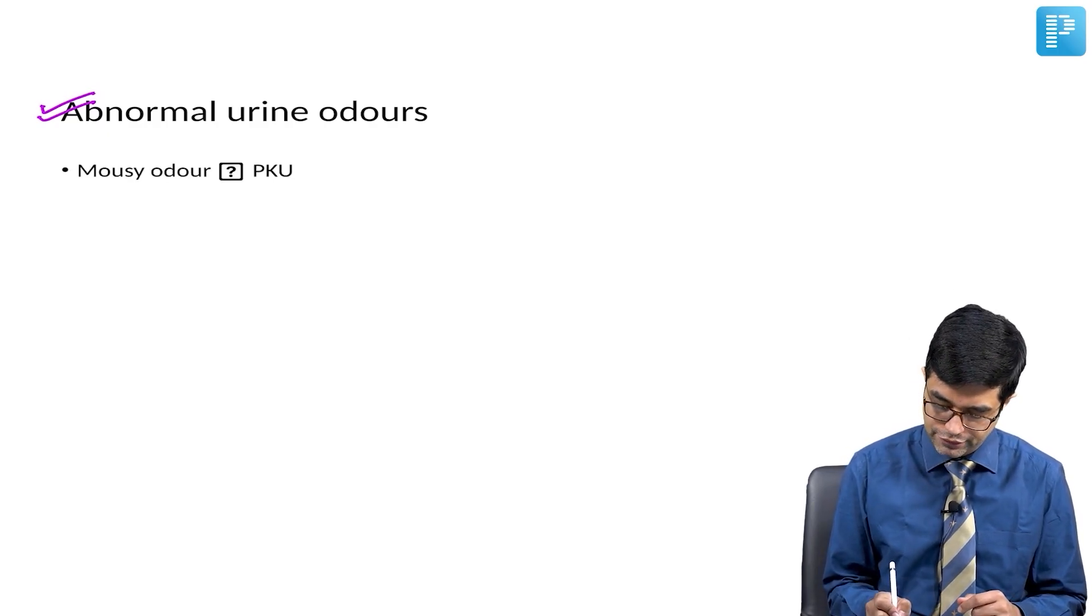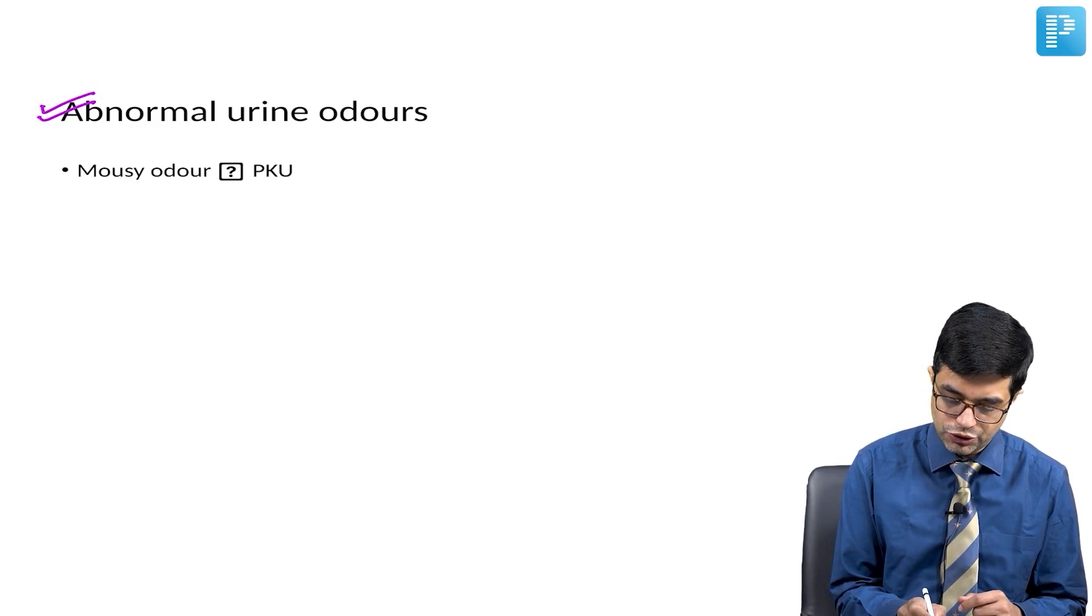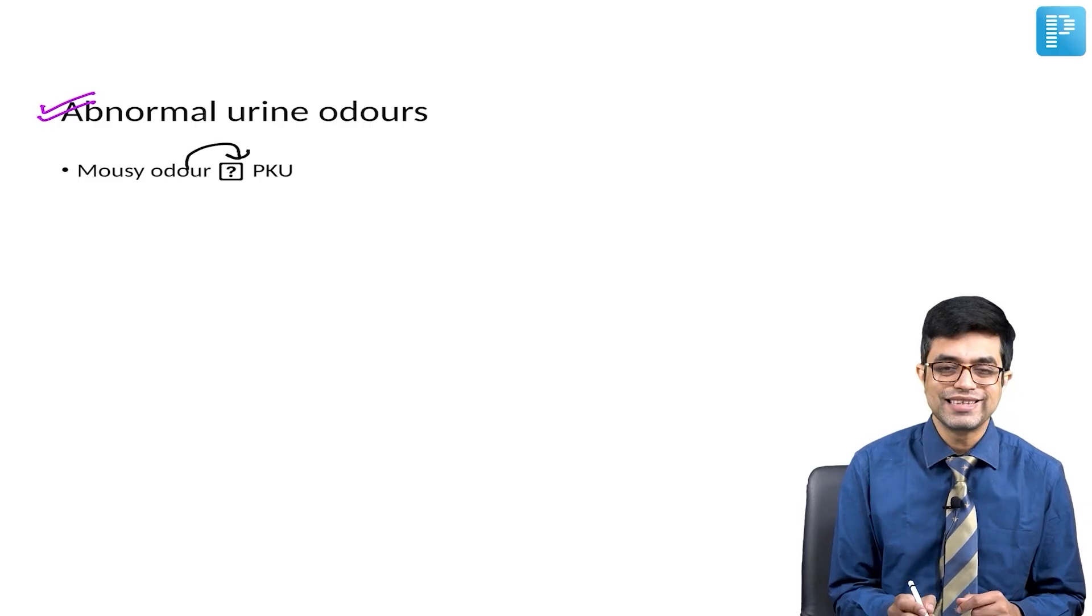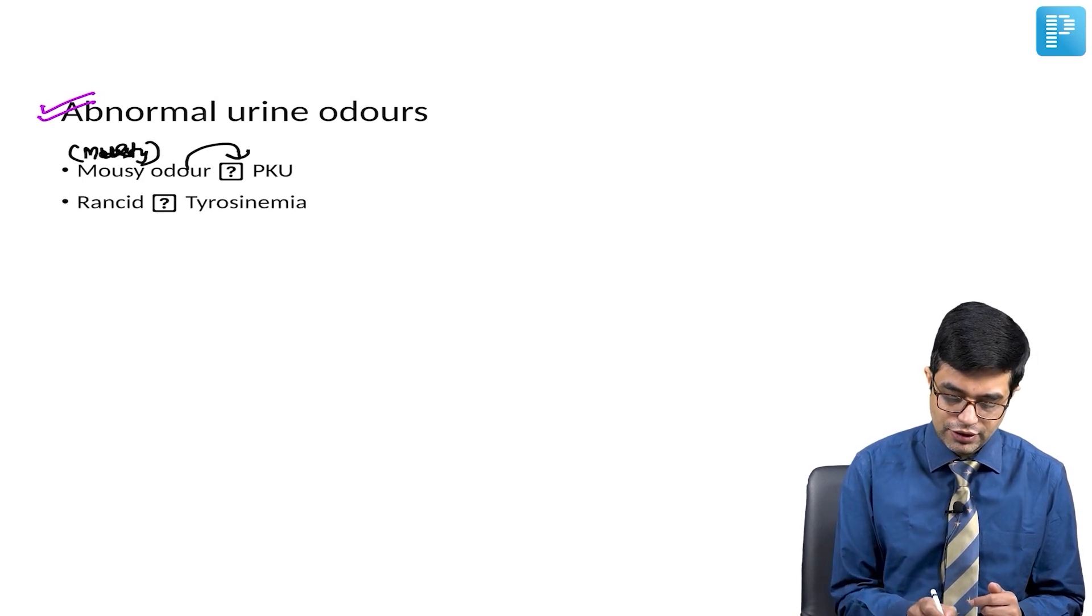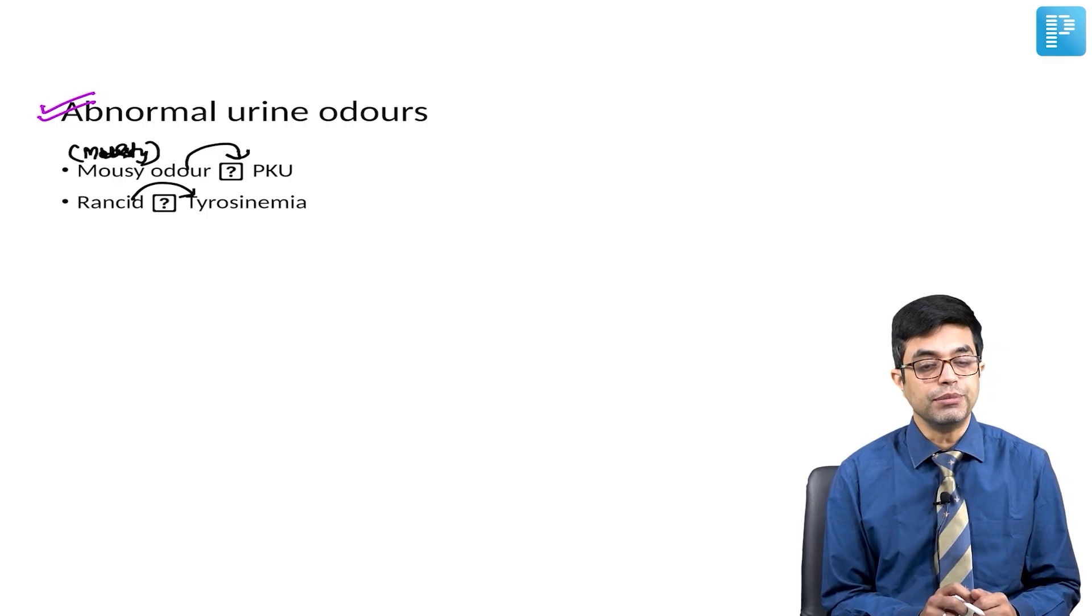First is mousy odor, which is a feature of phenylketonuria. Mousy odor, also known as musty odor, is a feature of phenylketonuria. Second is your rancid odor, which is a feature of tyrosinemia.